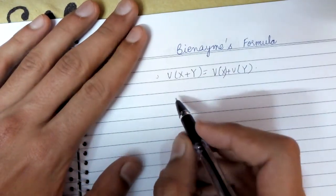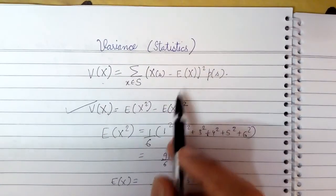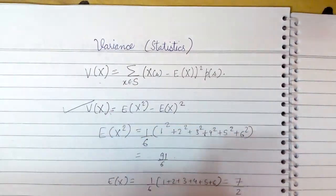Hello friends, so in the last lecture we have seen what is meant by variance. So just to recall, this is the formula of variance, these two are the formulas.